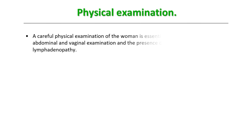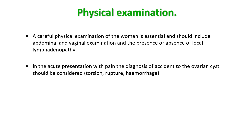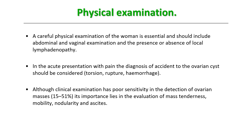What will you find on physical examination? A careful physical examination of the woman is essential, including abdominal and vaginal (internal) examination, and checking for local lymphadenopathy such as in the inguinal region. In acute presentation with pain, the diagnosis of torsion, rupture, and hemorrhage should be made based on vitals and palpation of the abdomen — you will find a lot of tenderness. Clinical examination has poor sensitivity of about 15–50%, but its importance lies in evaluating tenderness, mobility, nodularity, consistency (cystic vs. firm/hard), and presence or absence of ascites.